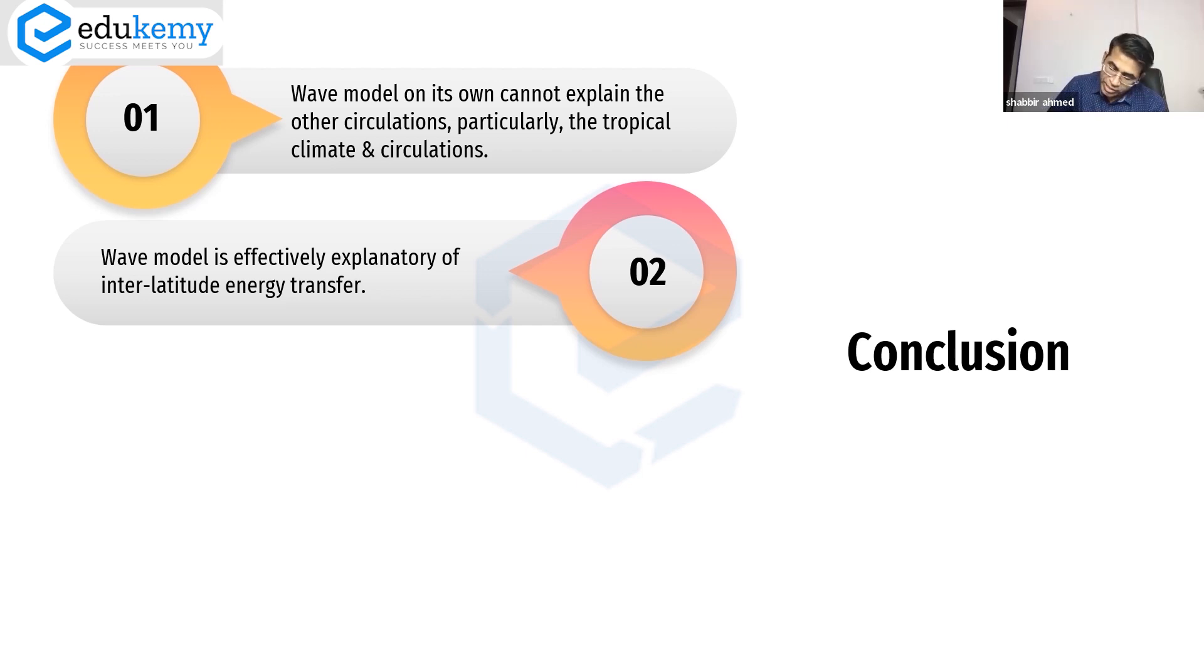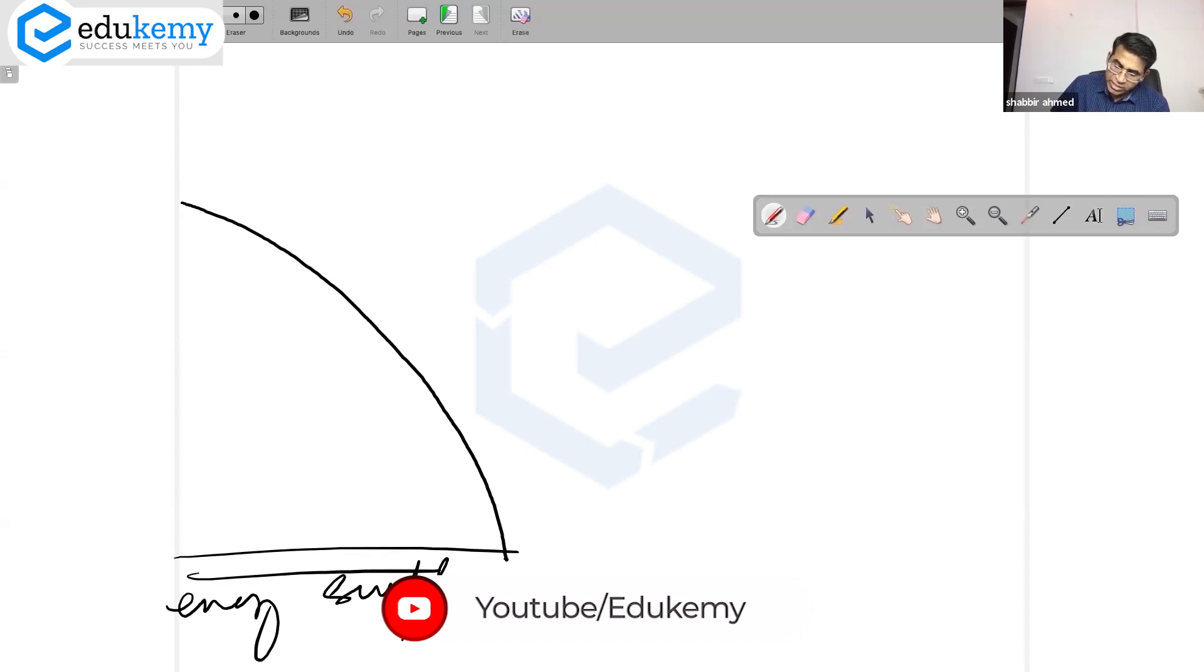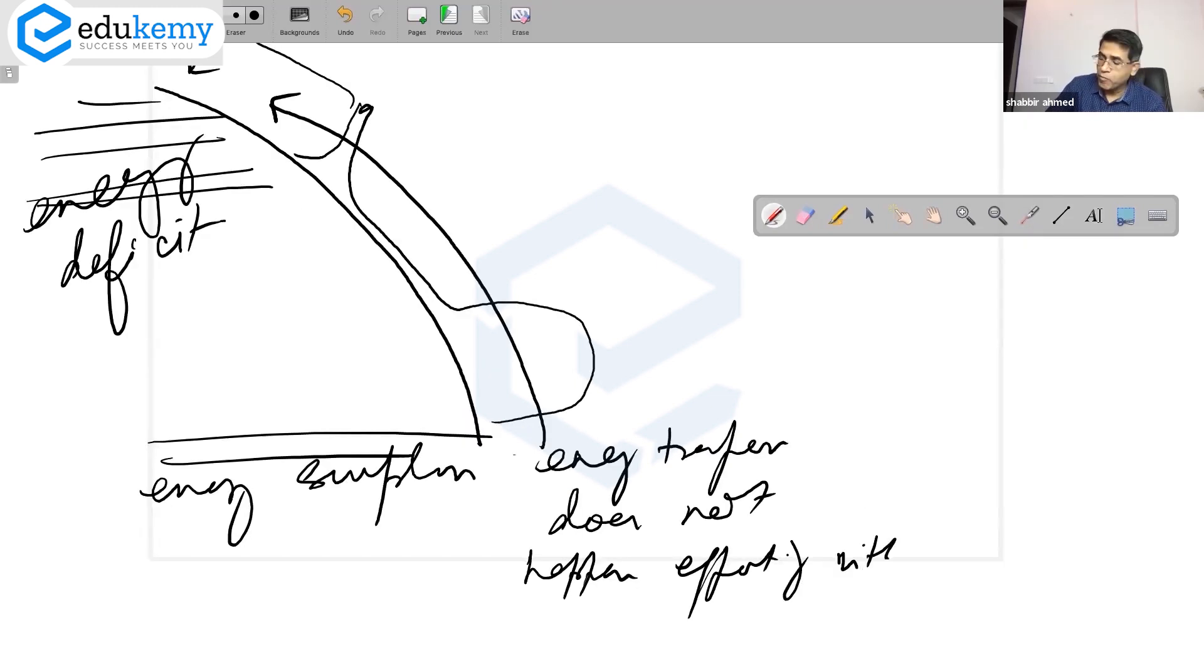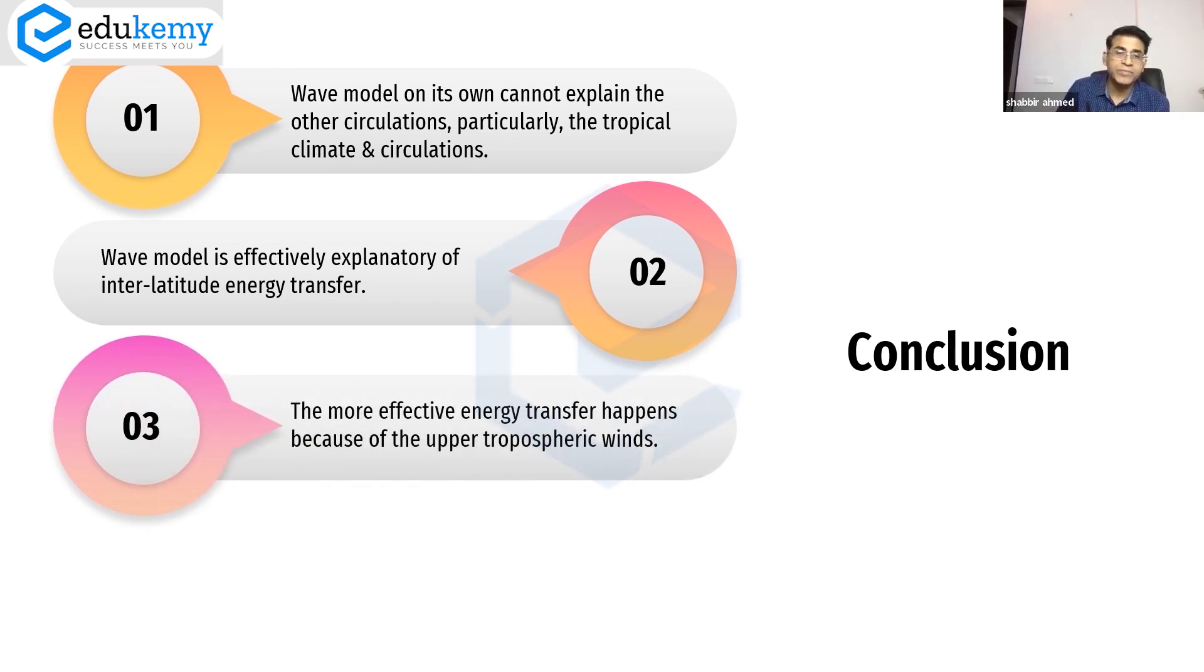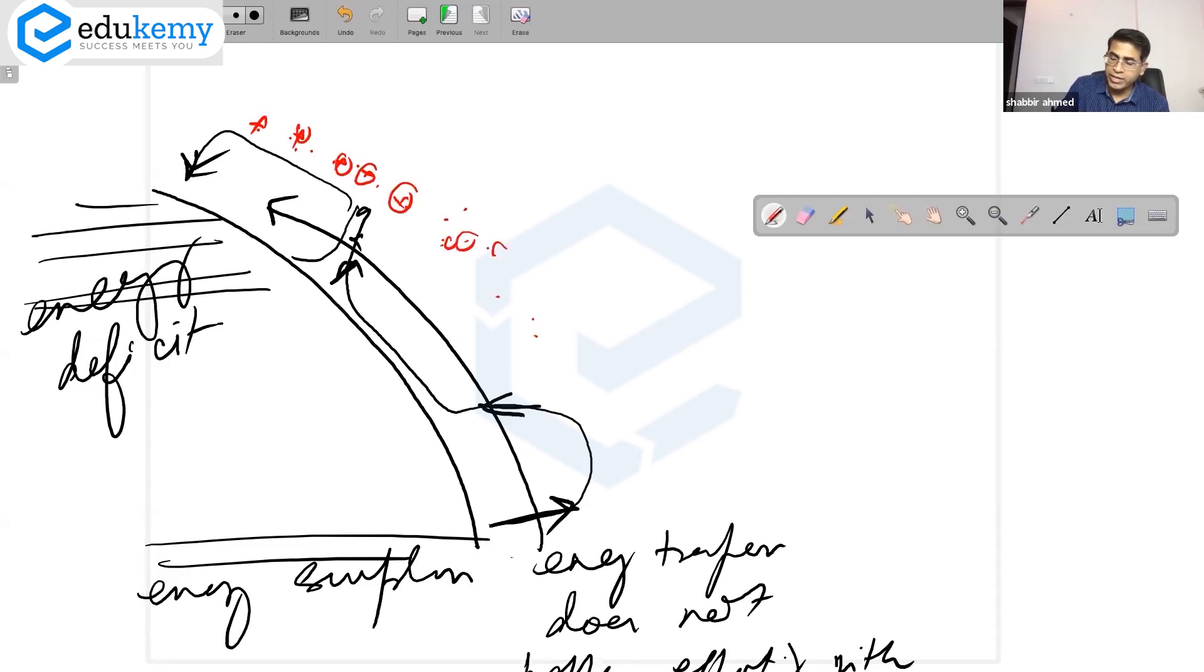Wave model is effectively explanatory of inter-latitude energy transfer. This is a very important point. So what we are saying is, if this is Earth's surface, these are energy surplus latitudes, these are energy deficit latitudes. Energy transfer does not happen effectively with the vertical cells—the rising air, descending air. The vertical circulations, the vertical cells are not effective in energy transfer.